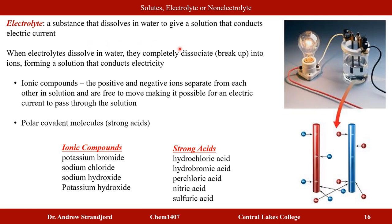When electrolytes are dissolved in water, they completely dissociate into ionic forms, forming a solution that conducts electricity. There are two types of common electrolytes: ionic compounds, where positive and negative ions form and separate in solution so they are free to move; and polar covalent molecules that are strong acids. Examples of ionic compound electrolytes include potassium bromide, sodium chloride, sodium hydroxide, and potassium hydroxide. Examples of strong acid electrolytes include hydrochloric acid, hydrobromic acid, perchloric acid, nitric acid, and sulfuric acid.